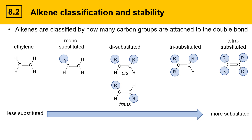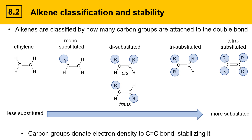Arranged from less to more substituted, each R group contributes a little bit of electron density to the C=C double bond to stabilize it, as indicated by the red arrows. In monosubstituted alkenes there is a small donation into the double bond; disubstituted alkenes have two donating groups and are slightly more stable than monosubstituted. Trisubstituted alkenes take it a step further, and tetrasubstituted alkenes have the most stability because four carbon groups are stabilizing the double bond. Less substituted alkenes are less stable; more substituted alkenes are more stable.